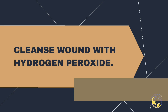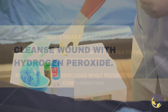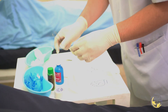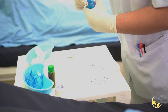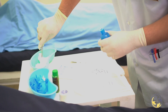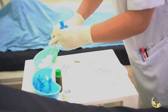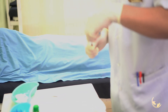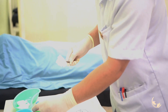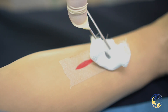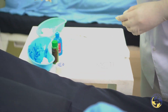Step 10: Clean wound with hydrogen peroxide. Use a separate swab for each cleansing stroke, cleaning from the less contaminated area to the most contaminated. This reduces the microbial load while preventing cross-contamination.